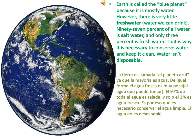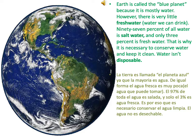Earth is called the blue planet because it is mostly water. However, there is very little fresh water. Fresh water is water we can drink. 97% of all water is salt water and only 3% is fresh water. That is why it is necessary to conserve water and keep it clean.